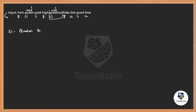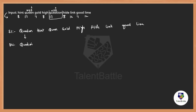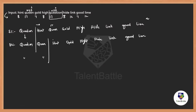Now let us all just move to the next place. That is: hint, queen, gold, high, hide, link, good, and lime. The first one is set — so in step 2 also it's going to be the same, which is question. After the first arranged word, what is the next highest one? Of course, queen. So queen comes to the second place, and the rest all just shift their places. The second is also fixed — question and queen are fixed.